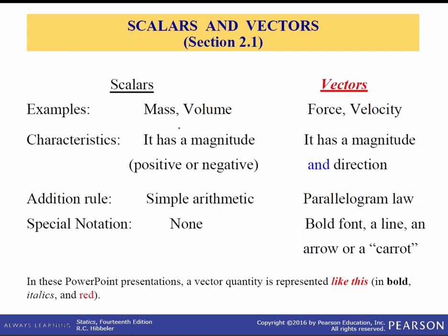A vector is a physical quantity that requires both a magnitude and a direction. Examples of vectors encountered in statics are forces, positions, and moments. A vector is shown graphically by drawing an arrow. The length of the arrow represents the magnitude of the vector, and the angle theta between that and some fixed reference axis denotes the direction of the vector. In print, vectors are represented by bold-faced letters — he also uses red and italics.